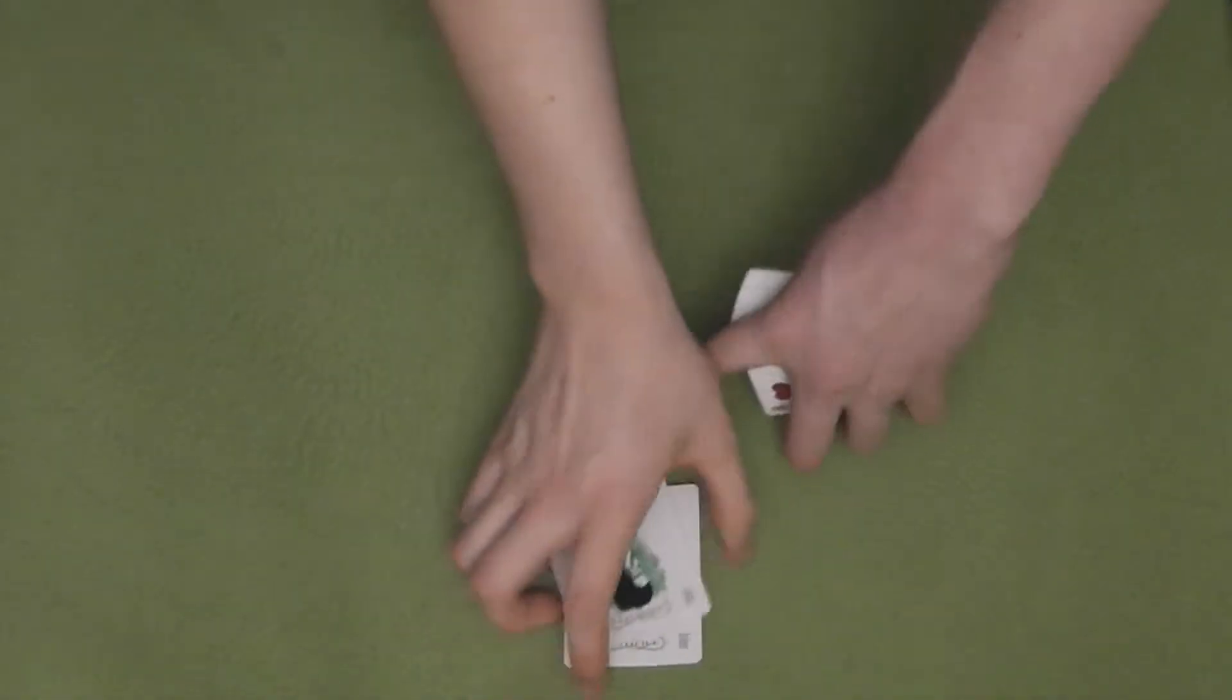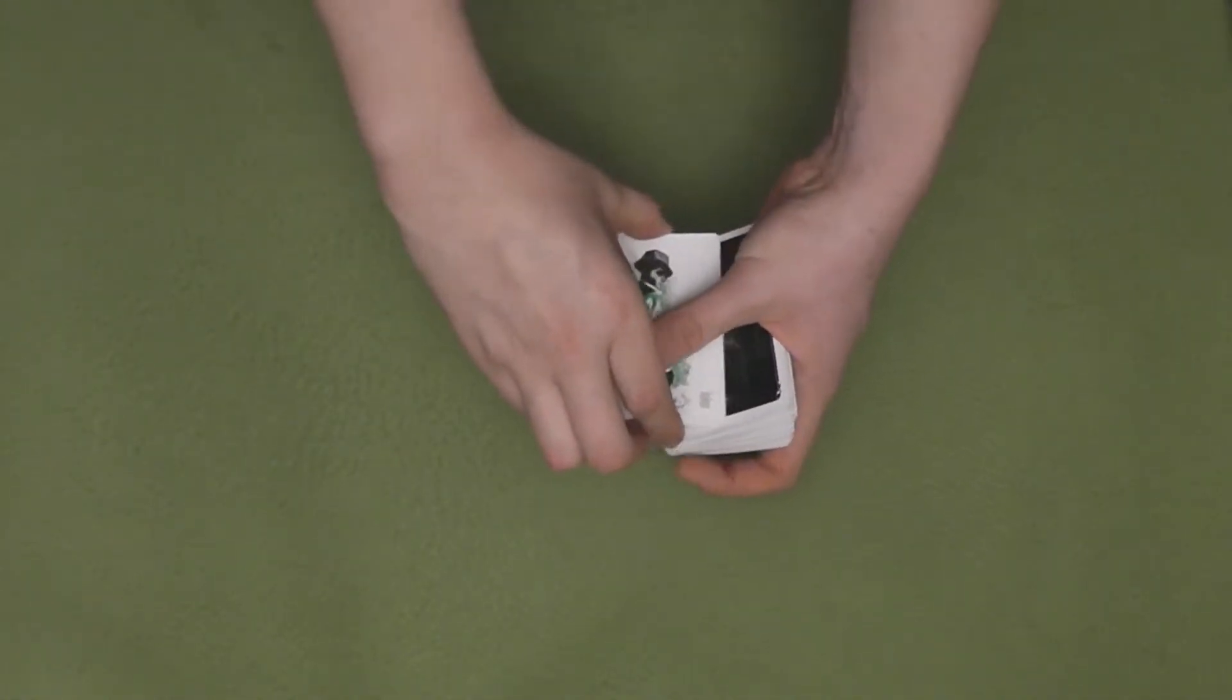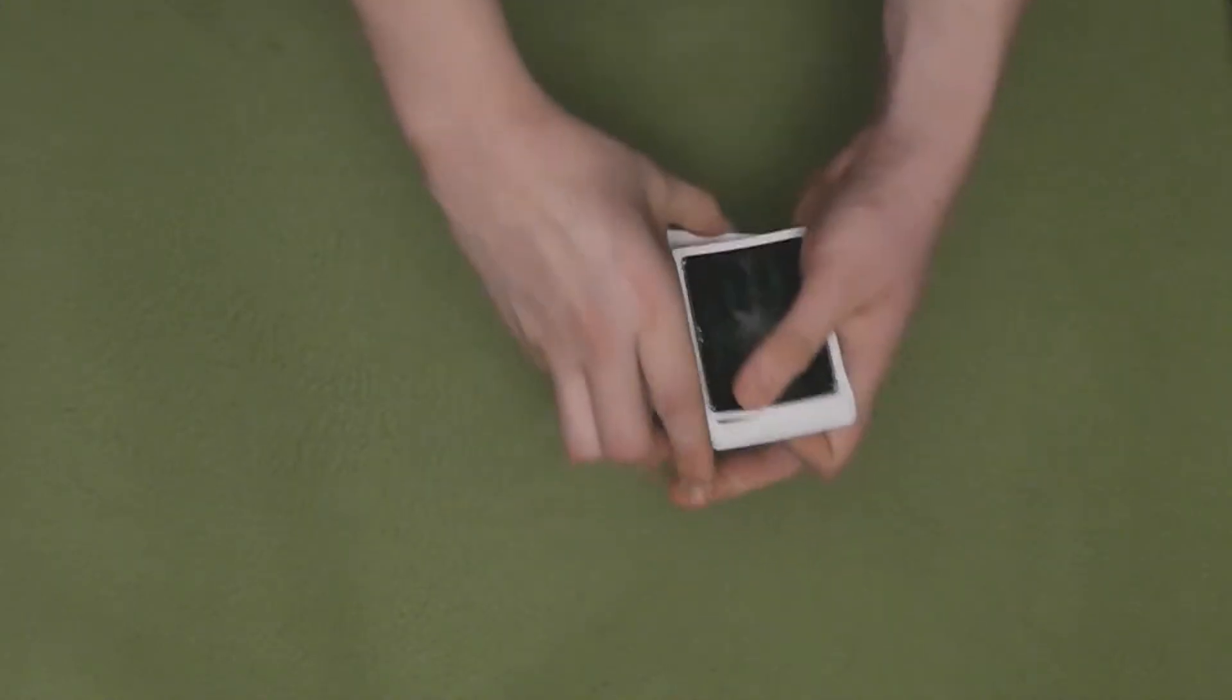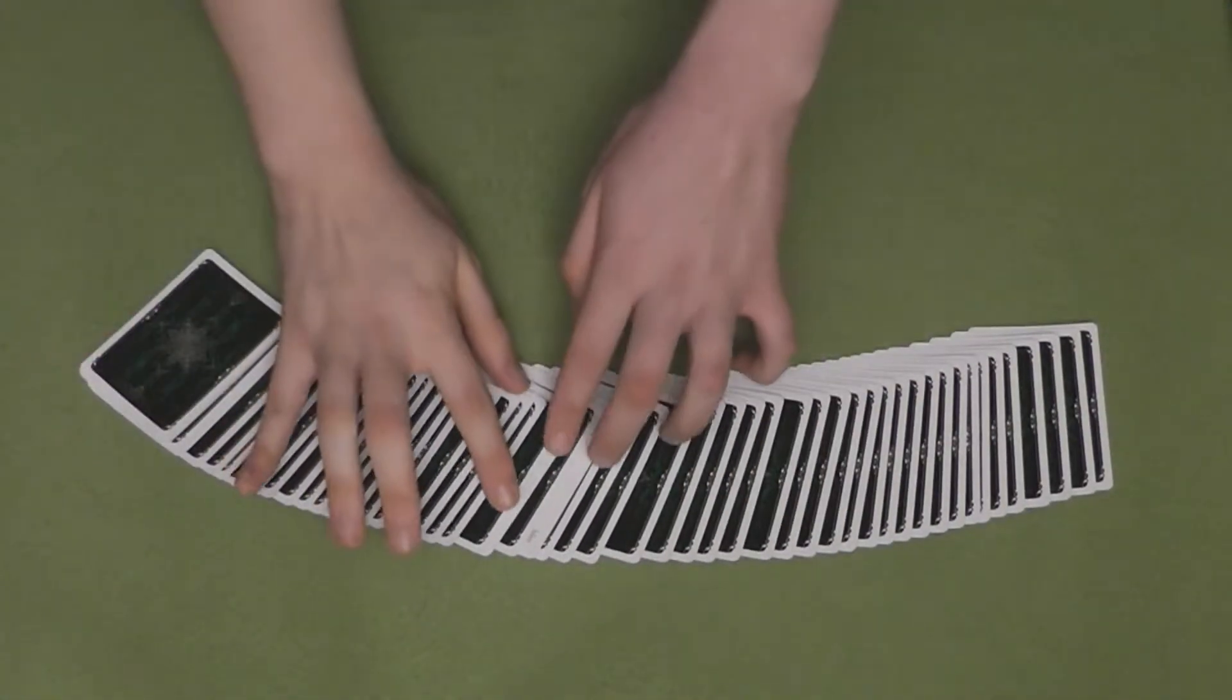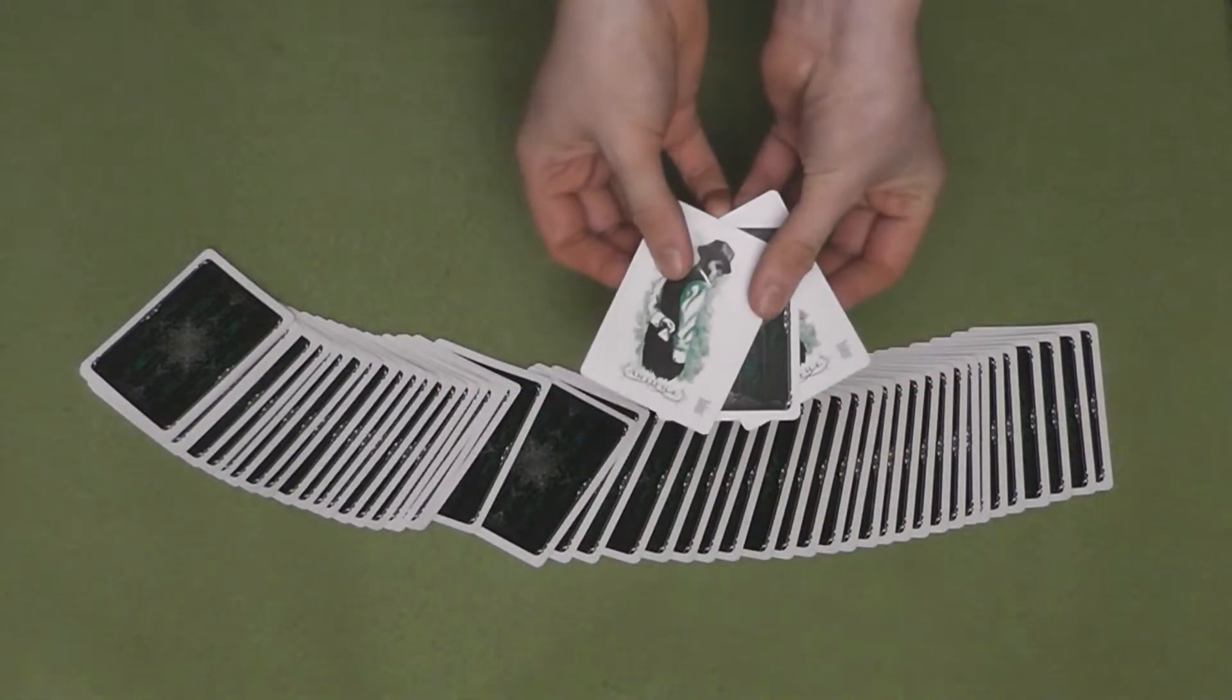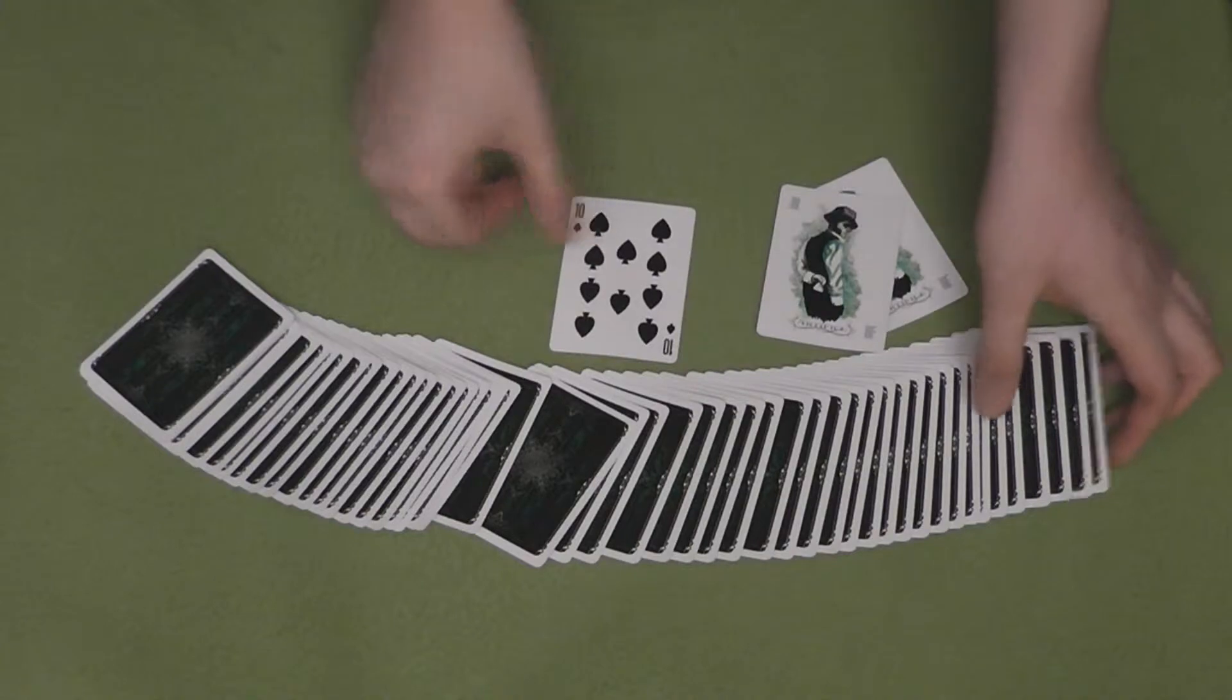Now, I will take the jokers, and one by one put them into the deck. And then I will click my fingers to see what they have achieved. So, what have the jokers done? Well, they have singled out one card. Let's see if it's the right one. Yes, it is. They are pretty good.